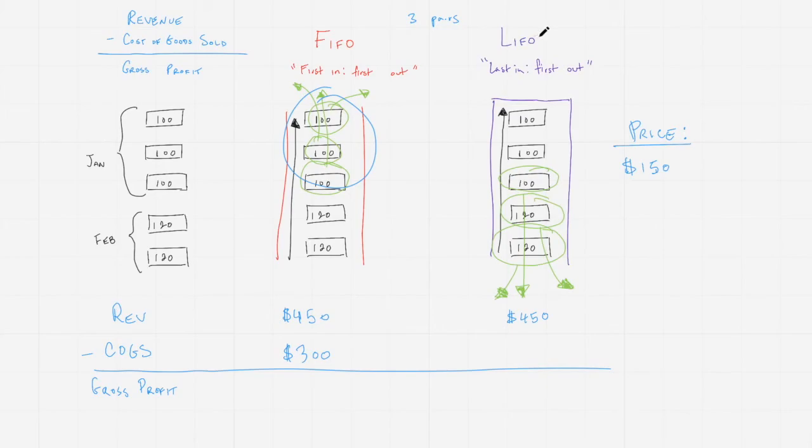However, in the LIFO method, since it was actually the last to come in that are the first to come out, the February pairs are being sold off first. We're selling three pairs, so we're selling the two we bought in February and then one of the ones that we bought in January. We're selling two pairs at $120 and one at $100. $120 plus $120 gives us $240, and then another $100 gives us $340. This cost of goods sold under LIFO becomes $340.